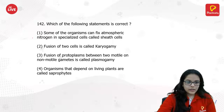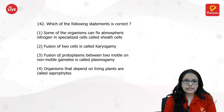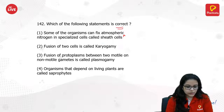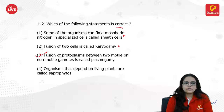Which of the following statements is correct? Some organisms can fix atmospheric nitrogen in special cells called heterocysts. Fusion of two cells is called karyogamy — no. Fusion of protoplasms between two motile or non-motile gametes is called plasmogamy.